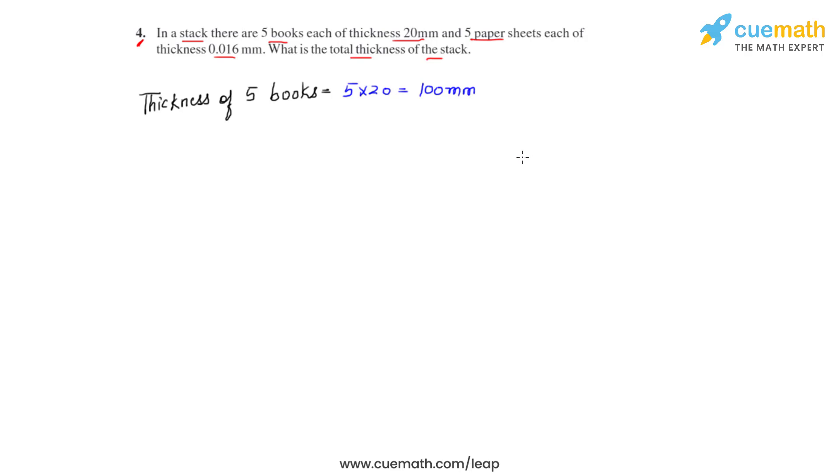Now next what we have to do is to find the thickness of the five paper sheets. So the thickness of one paper sheet is 0.016 millimeters, so we multiply 5 with 0.016 and we get it as 0.08 millimeters.